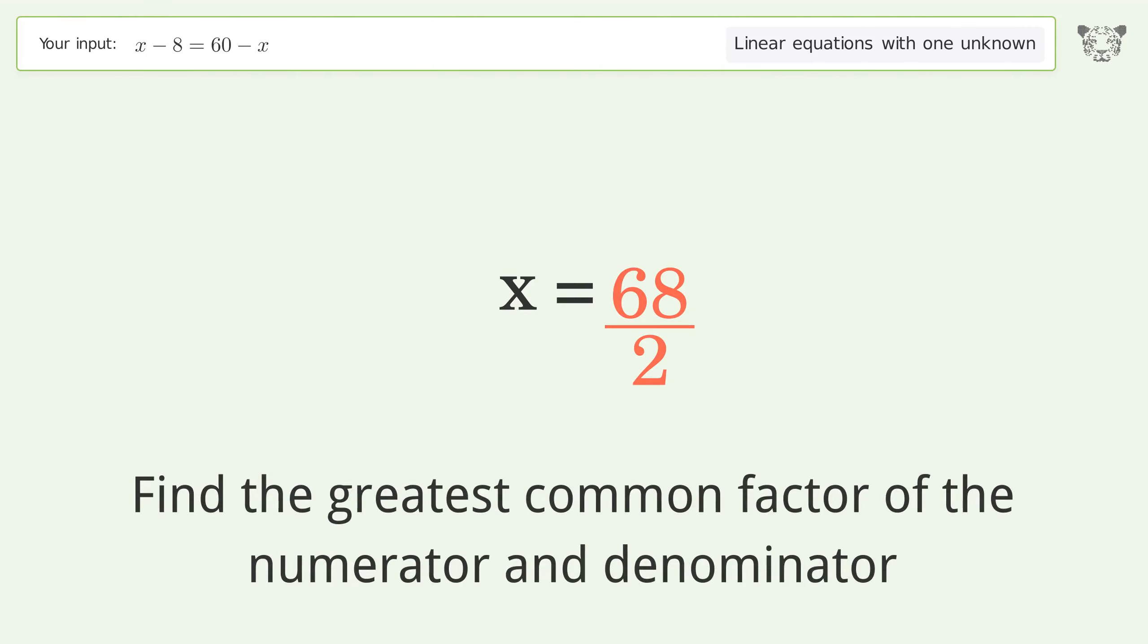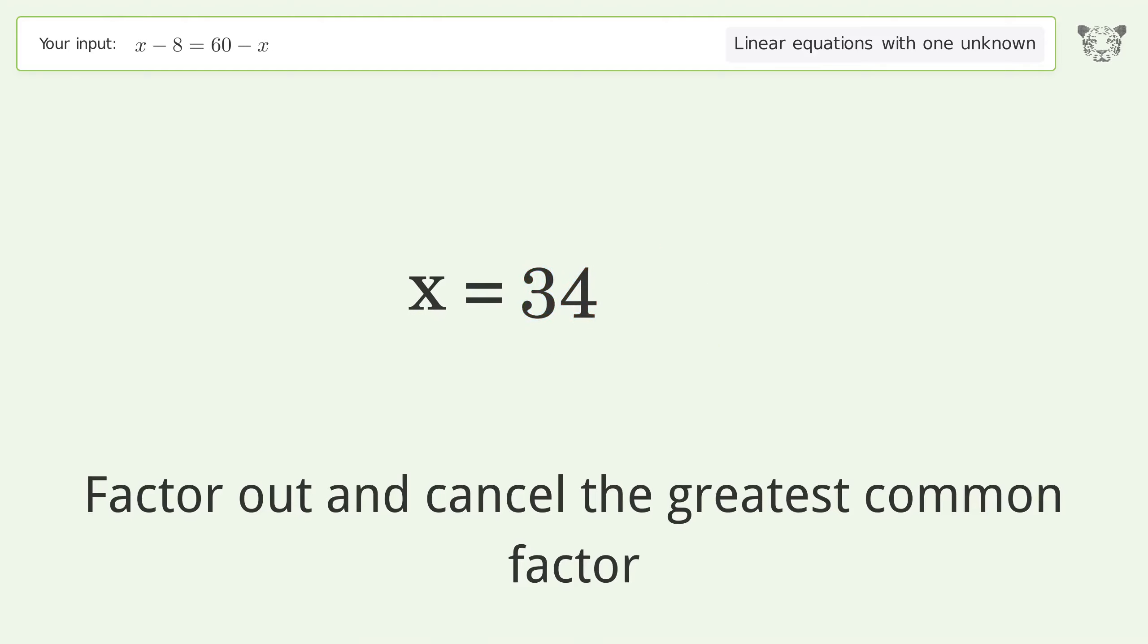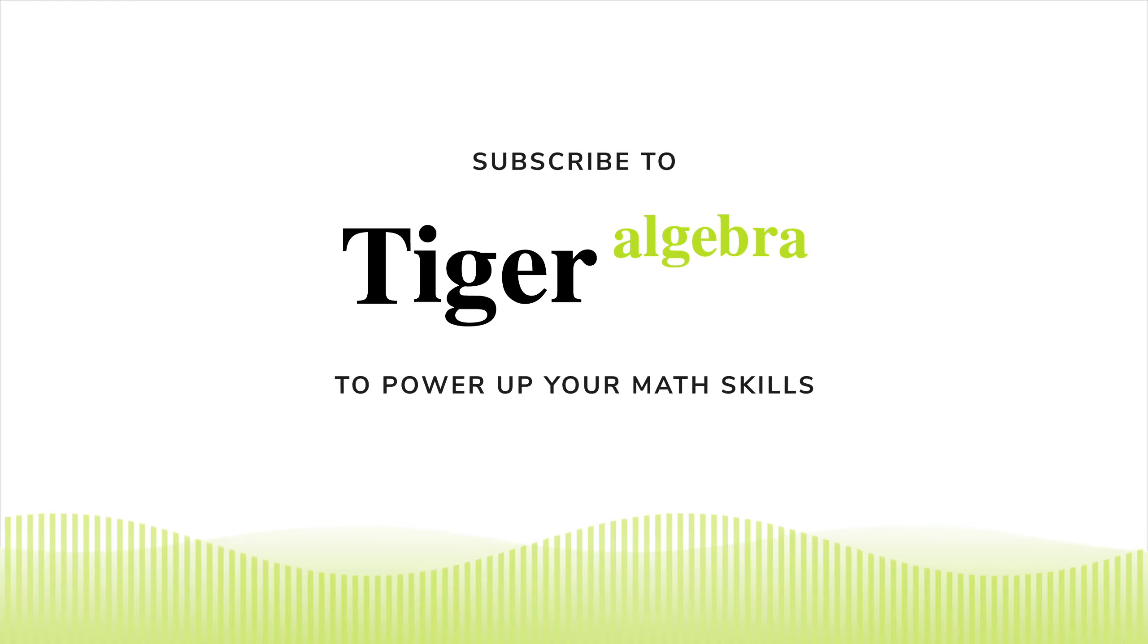Find the greatest common factor of the numerator and denominator. Factor out and cancel the greatest common factor. So the final result is x equals 34.